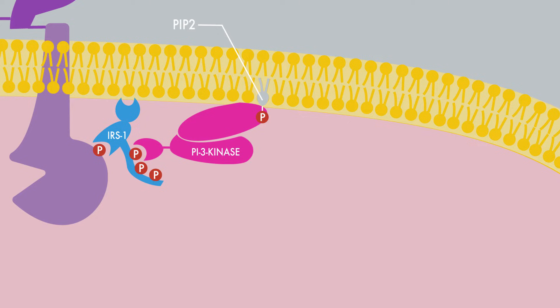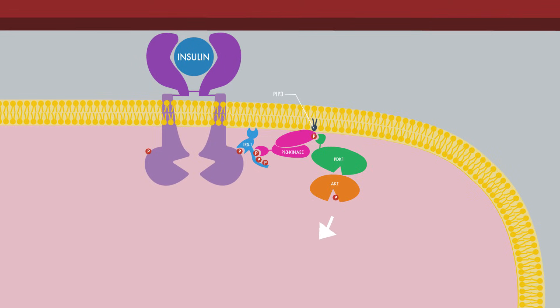The addition of the phosphate converts PI2 to PI3, which serves as a recognition site for the PI3-dependent protein kinase, or PDK1 for short. PDK1 phosphorylates AKT, another protein kinase, which further relays the signal to the interior of the cell.